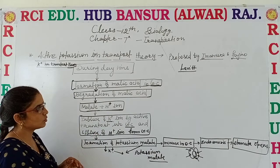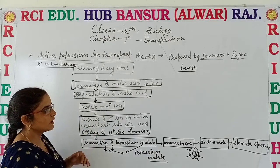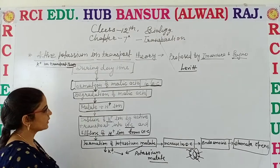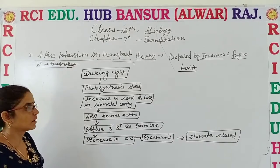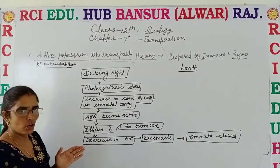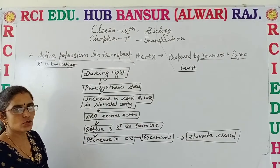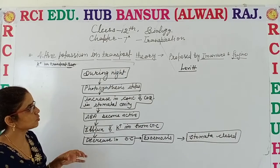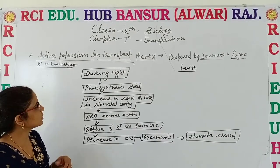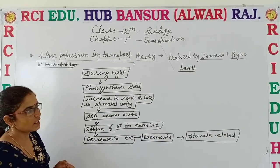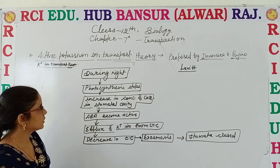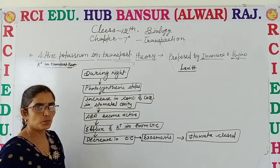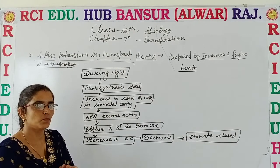When the guard cell becomes turgid, their wall becomes stretched and they cause opening of the stomatal pore. So this is all about the opening of the stomatal pore. Now we discuss about the closing of the stomatal pore. We already discussed how the stomatal pore gets opened during the daytime due to the formation of potassium malate, and what happens during the night time and how the stomatal pore closes.